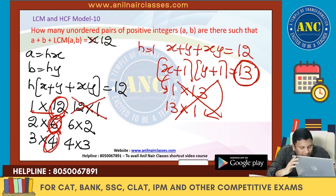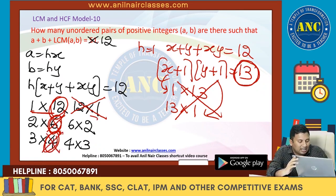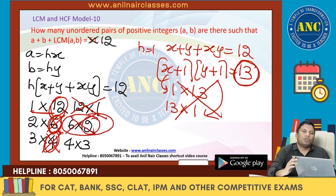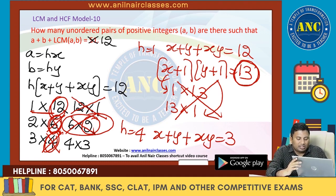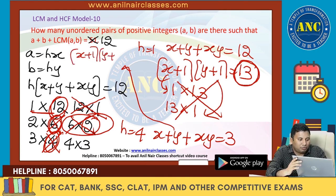If H is 3: X plus Y plus XY equals 3. This becomes (X plus 1) into (Y plus 1) equals 4. The only non-trivial factorization of 4 is 2 into 2, giving one valid solution.